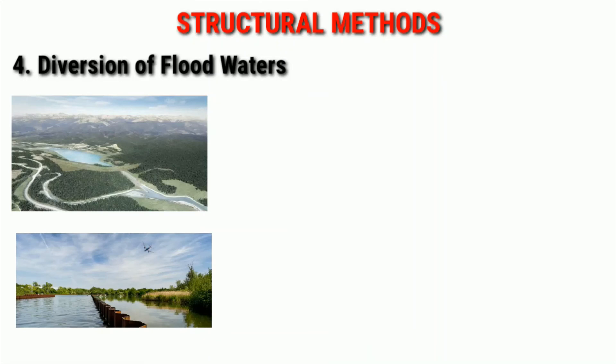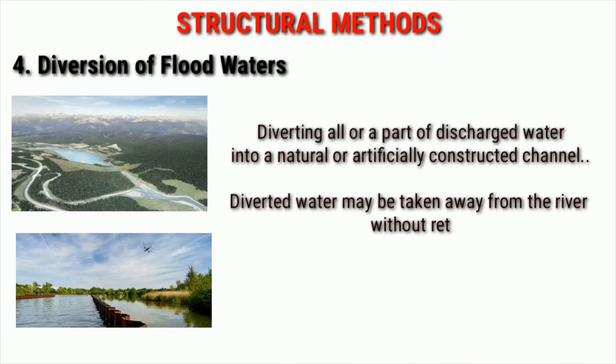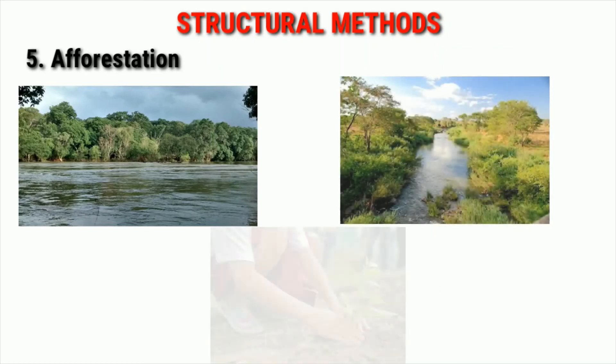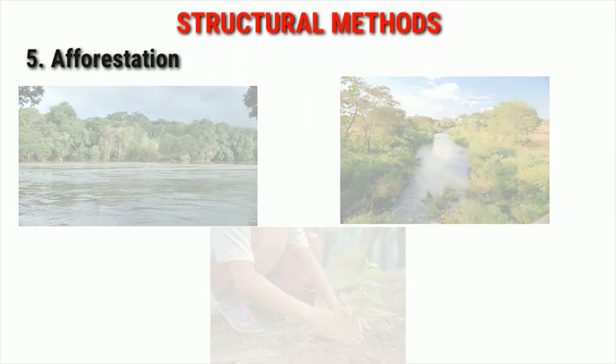The next measure for flood control is the diversion of flood water. This process involves diverting all or a part of discharged water into a natural or artificially constructed channel. The diverted water may be taken away from the river without returning it further downstream, or it may be returned to the river some distance downstream, or to a lake, or directly to the sea. Another method is afforestation — increasing vegetative cover serves as an effective measure to control floods, though it is not very effective during large floods.